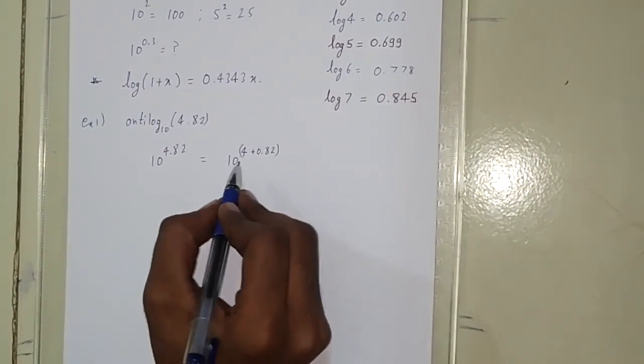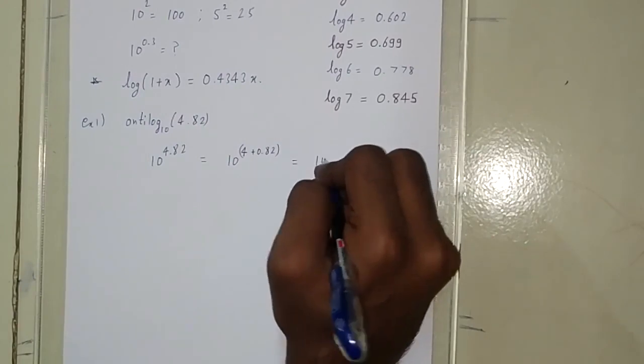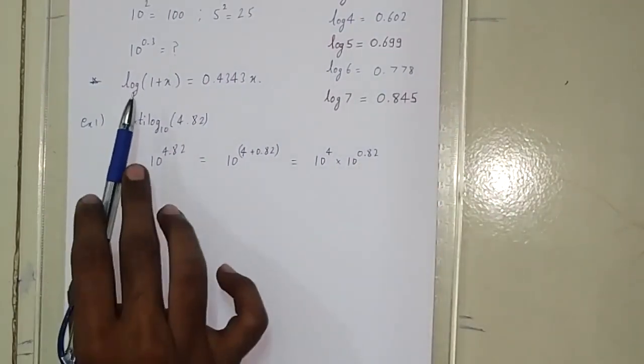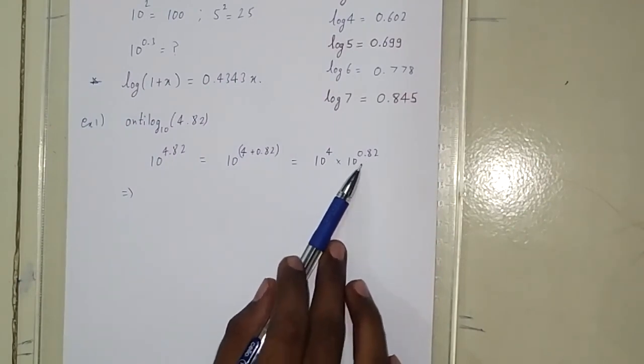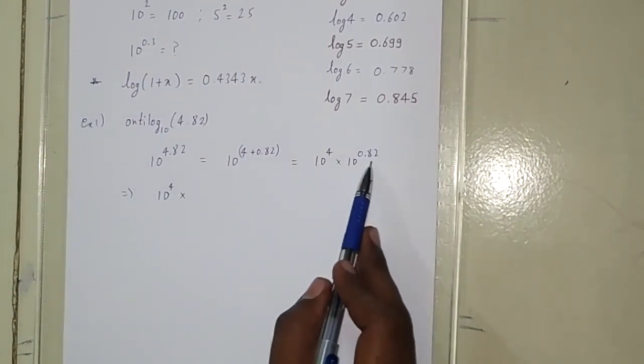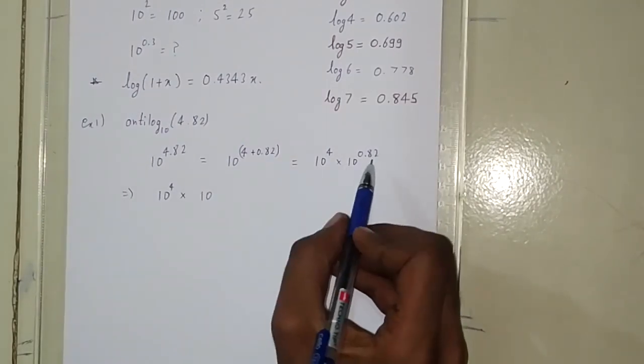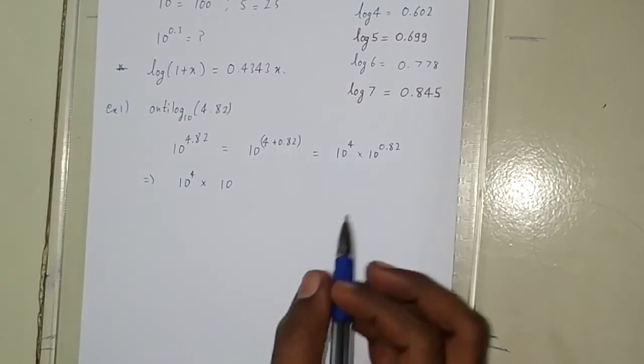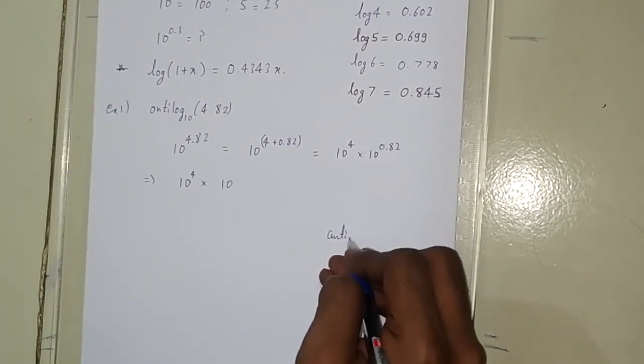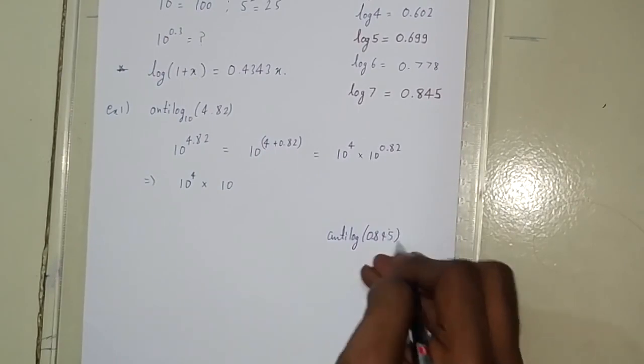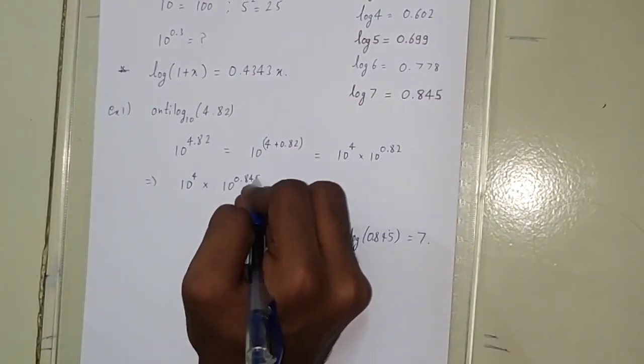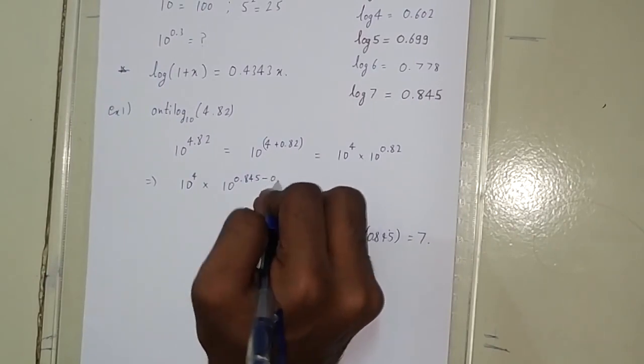Now expanding this, it becomes 10 to the power 4 times 10 to the power 0.82. As it's an approximation formula, you need to reduce it as much as possible. 10 to the power 0.82 can be written using the nearest number. Since 0.845 is log 7, antilog of 0.845 equals 7. We can use it here: 0.845 minus 0.025 equals 0.82.